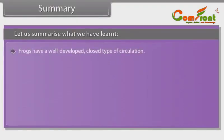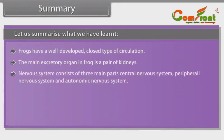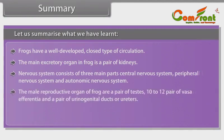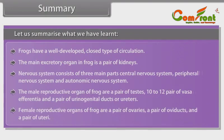Frogs have a well-developed closed type of circulation. The main excretory organ is a pair of kidneys. The nervous system consists of three main parts: central nervous system, peripheral nervous system and autonomic nervous system. The male reproductive organs are a pair of testes, 10–12 pairs of vasa afferentia and a pair of urinogenital ducts or ureters. The female reproductive organs are a pair of ovaries, a pair of oviducts and a pair of uteri.